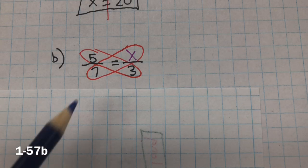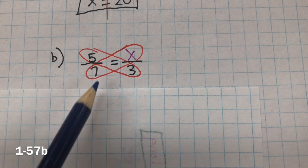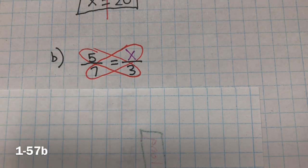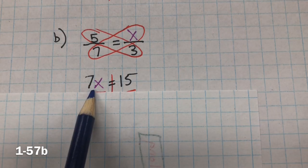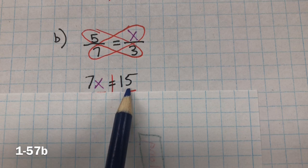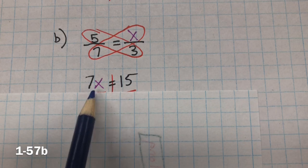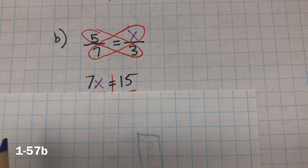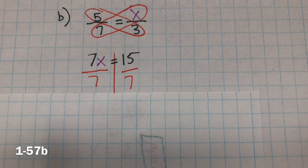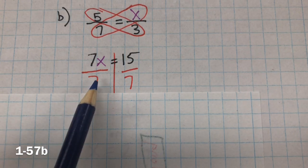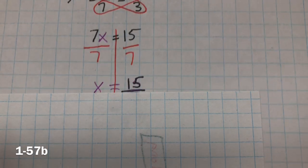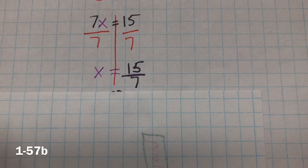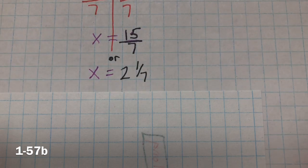For B, we're going to cross-multiply. 7 multiplied by x and 5 multiplied by 3. 7 multiplied by x is 7x. 5 multiplied by 3 is 15. Inverse property of multiplication is division. So we divide both sides by 7, which 7 divided by 7 is 1. And 15 divided by 7 equals 15 sevenths, or 2 and 1 seventh.